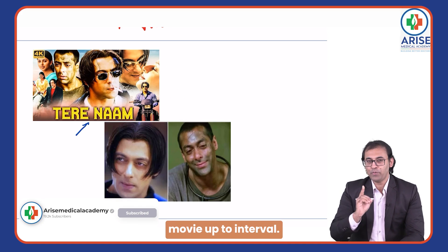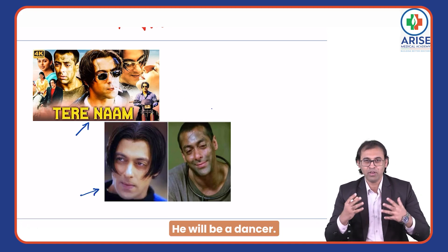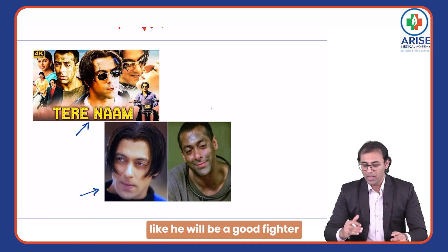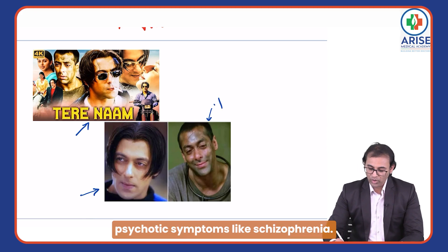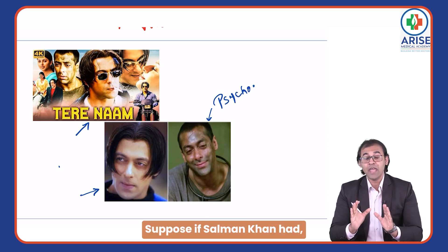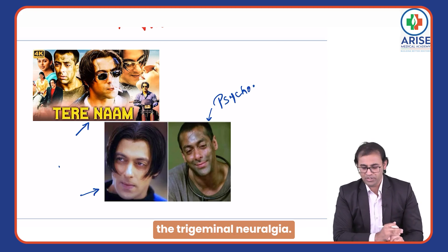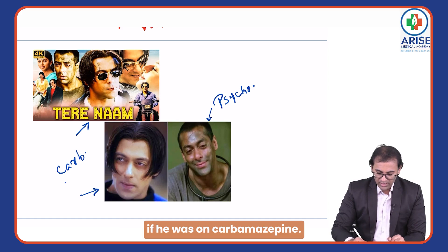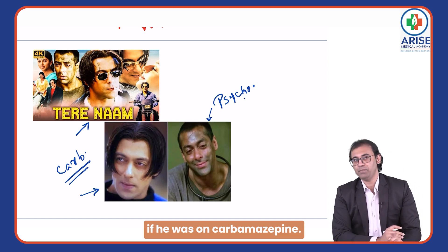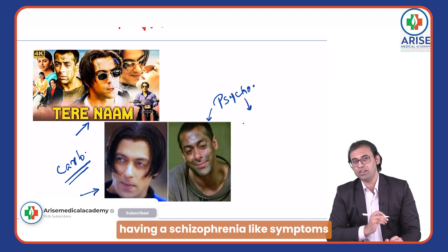Now let's learn a clinical aspect using a movie analogy. In an old Salman Khan movie, up to interval he is an action hero — a dancer, a good fighter. But after the interval, he starts having psychotic symptoms like schizophrenia. Suppose Salman Khan had trigeminal neuralgia and was already on carbamazepine.